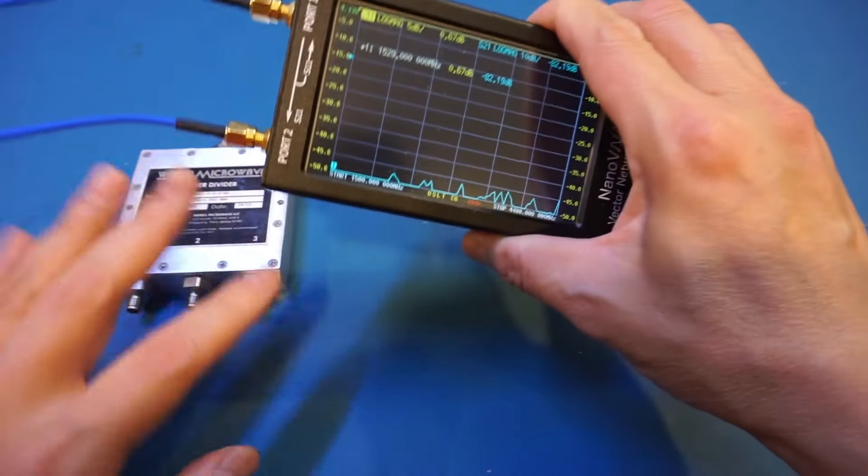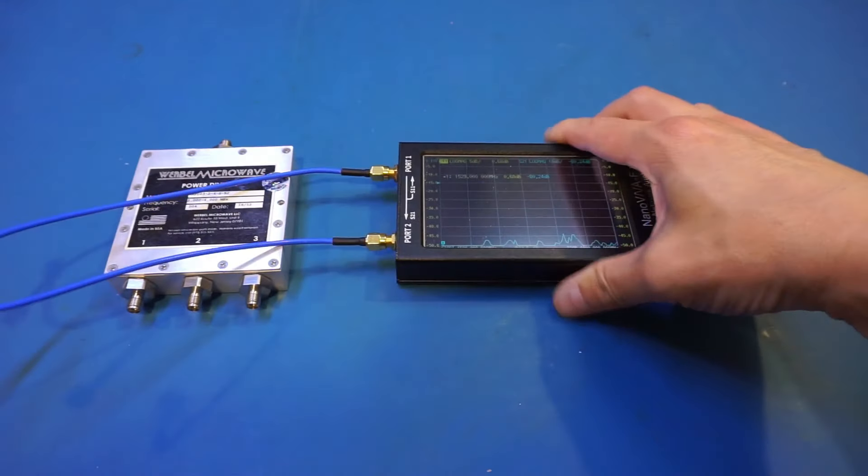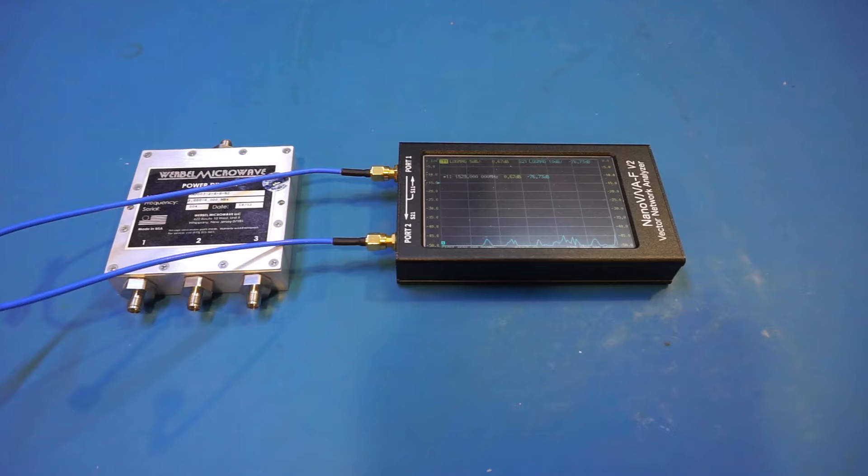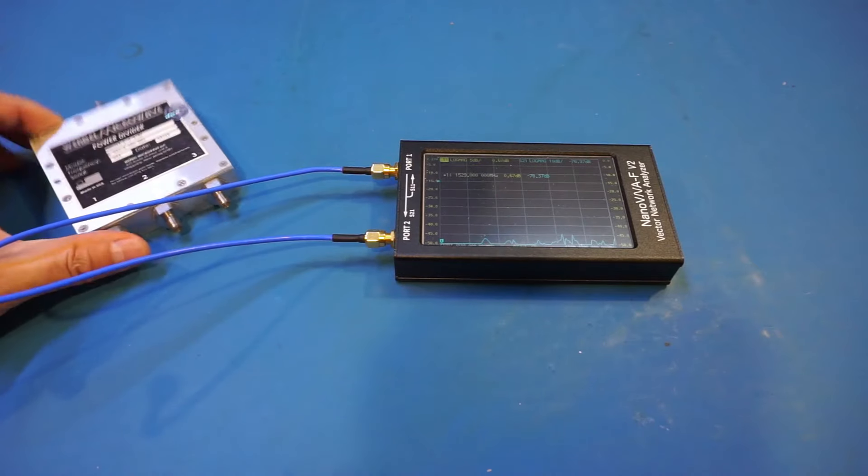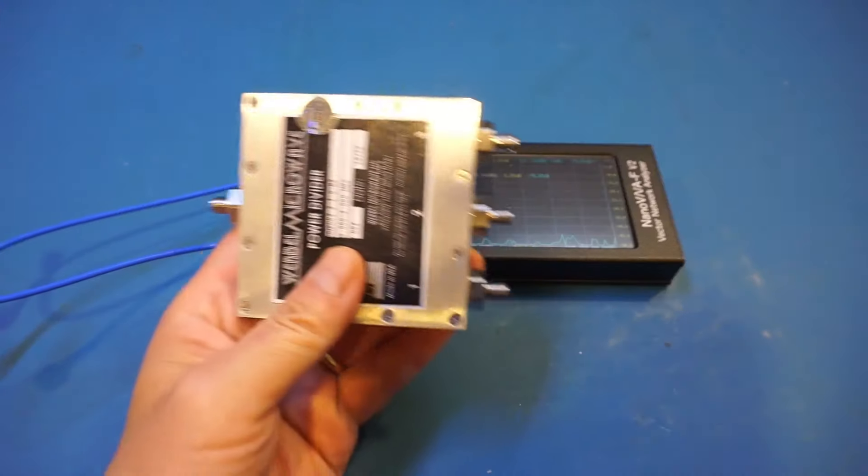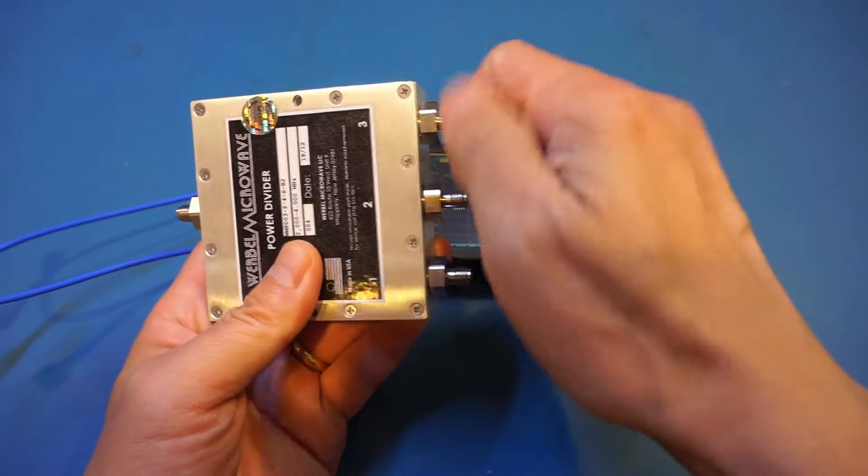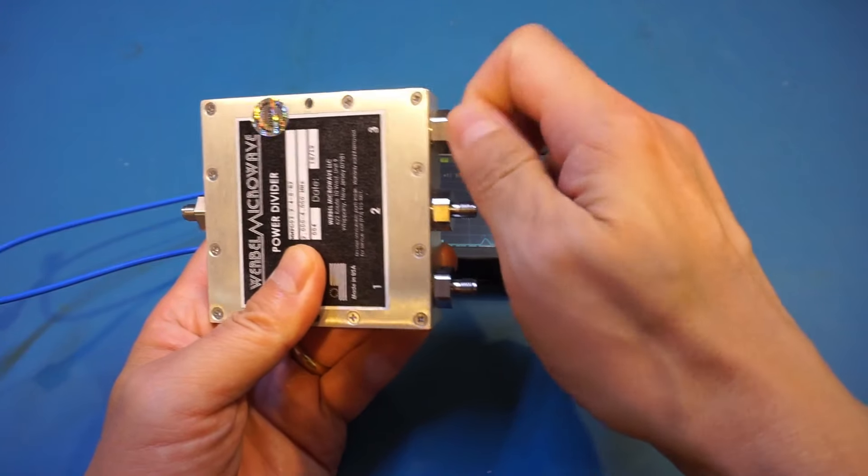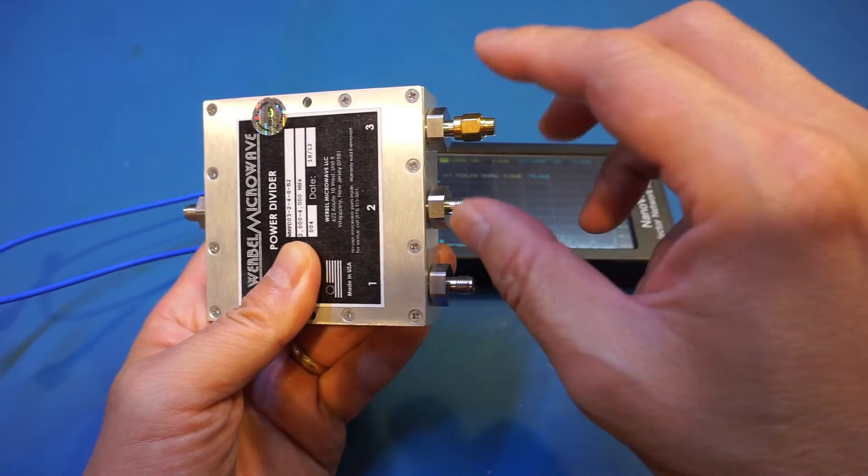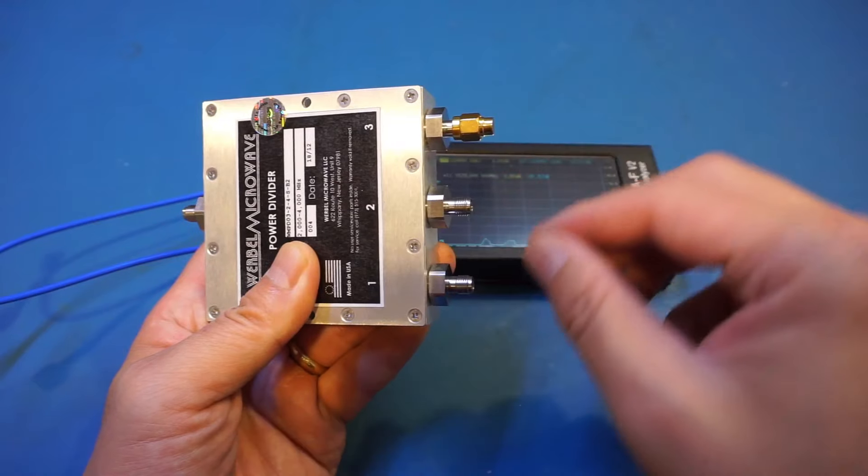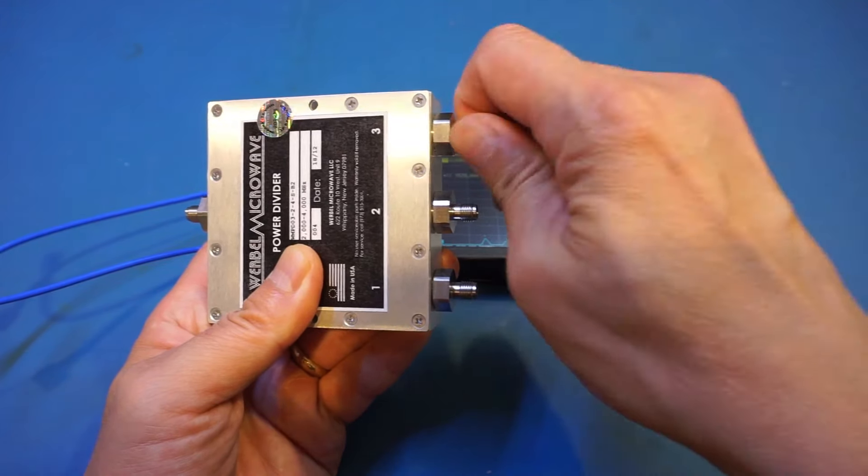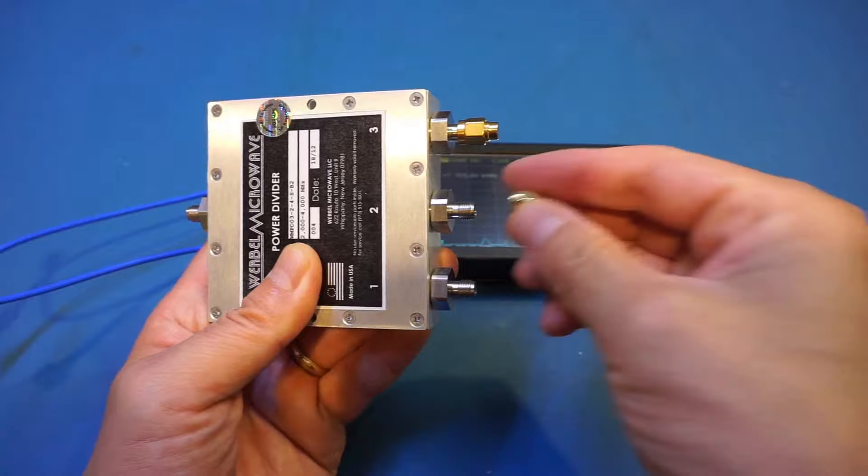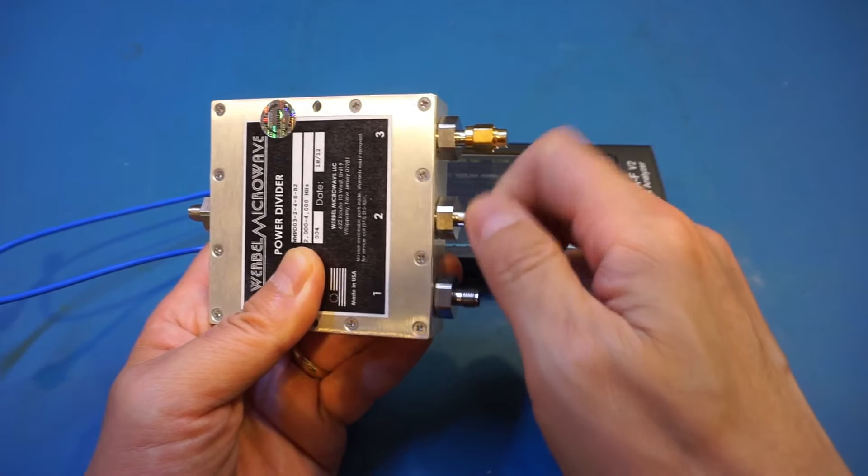Now the first couple of parameters we're going to look at are the insertion loss and return loss, and these are important for any of these kind of power dividers. So what I'm going to do is terminate two of the ports. It's very likely that at least these two ports are going to behave slightly differently given the construction. Of course the outer two ports I expect would be similar. Anyway, so let's terminate these two ports.